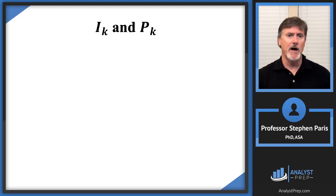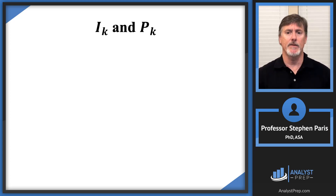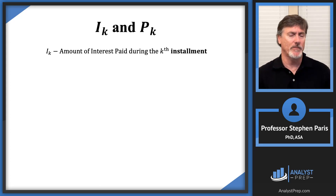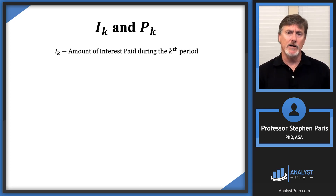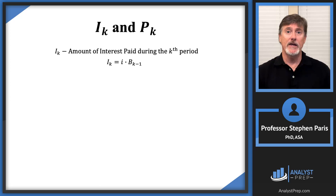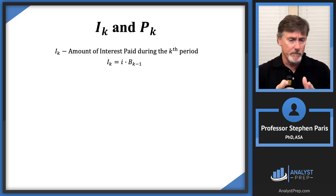Now let's turn our attention to the symbols cap I sub K and cap P sub K — the amount of interest being repaid with the Kth payment and the amount of principal being repaid in the Kth payment. Cap I sub K is the amount of interest paid during the Kth period, sometimes called the Kth installment. Symbolically, interest is paid at the end of the period based on the balance at the beginning of the period. So the amount of interest at time K is the interest rate times the balance at time K minus one: cap I sub K equals i times cap B sub K minus one.